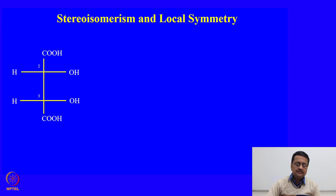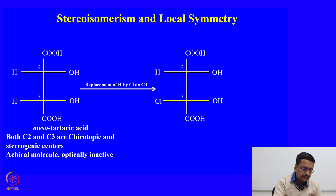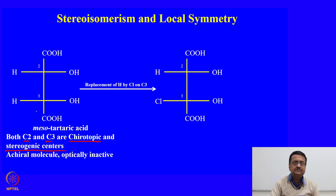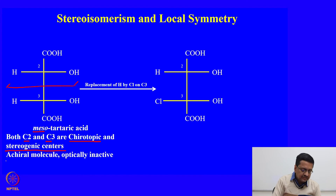Let us try to see another example of mesotartaric acid. In this case, both C2 and C3 are chirotopic and stereogenic centers because in both cases there are different substitutions present. This molecule has a mirror plane that is present; therefore, this molecule is called the meso compound or mesotartaric acid, and this compound is an achiral compound and therefore optically inactive.